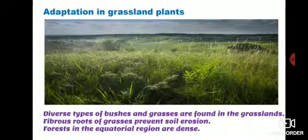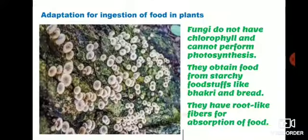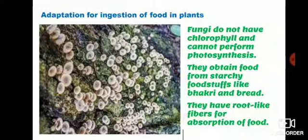Forests in the equatorial region are dense. Animals like tiger, elephants and deer can remain hidden in these grasses. Adaptations for ingestion of food in plants: fungi do not have chlorophyll and cannot perform photosynthesis, so they cannot make their own food. They obtain food from starchy foodstuffs like bhakri and bread, and have root-like fibers for absorption of food.